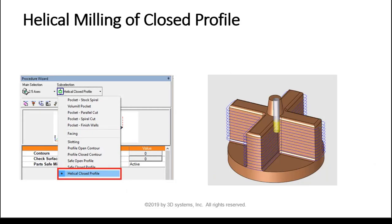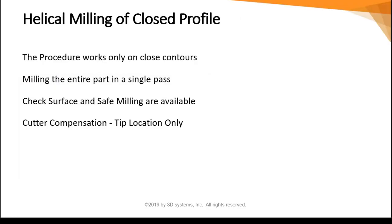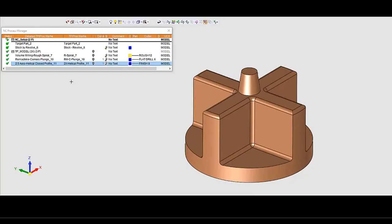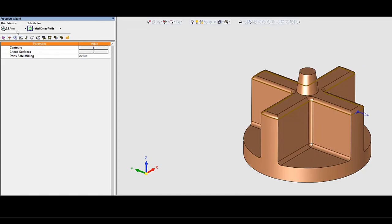Another new procedure in version 15 is helical milling of closed profile. The procedure works only on closed contours. It can mill the entire part in a single pass. Check surface and safe milling are available. Cutter compensation: tip location only. Under 2.5 axis, this is called helical closed profile and accepts only closed contours. A down step can be set.